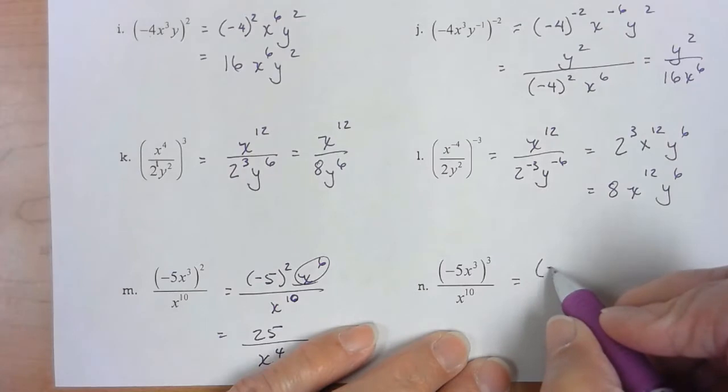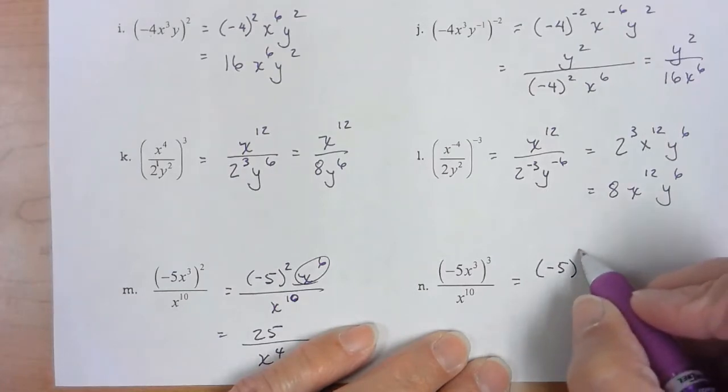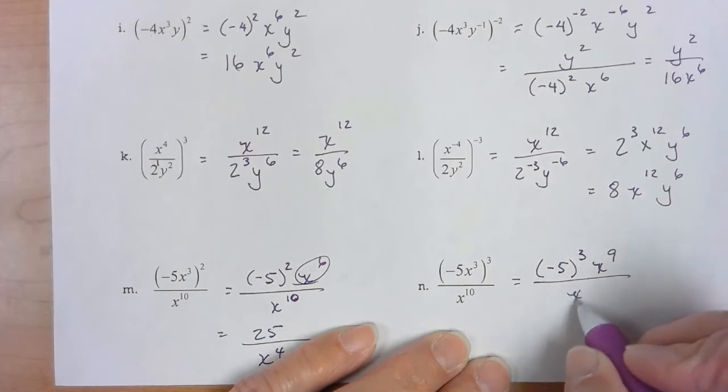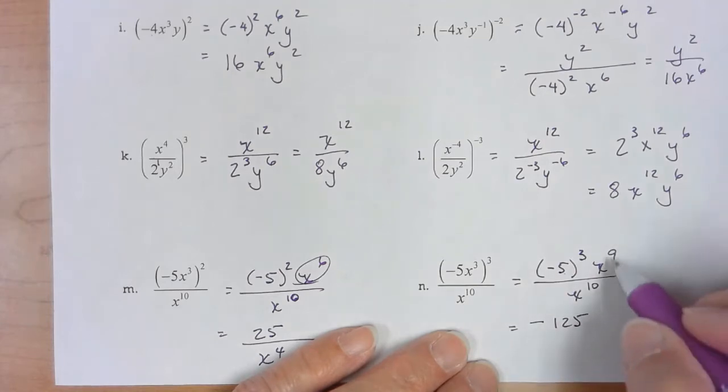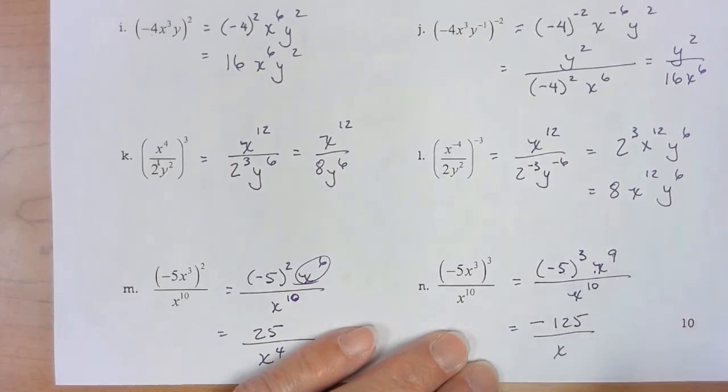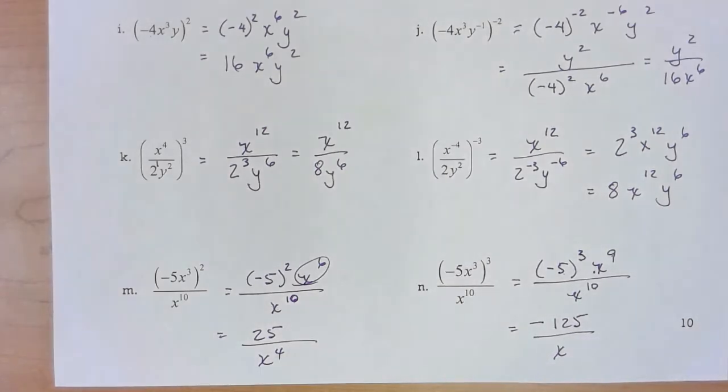A negative five times negative five times negative five, I'm going to have a negative. That'll be a 125. And if I subtract going down that would be negative 125 over x. So try the homework on this and hopefully these problems will help you with that homework.